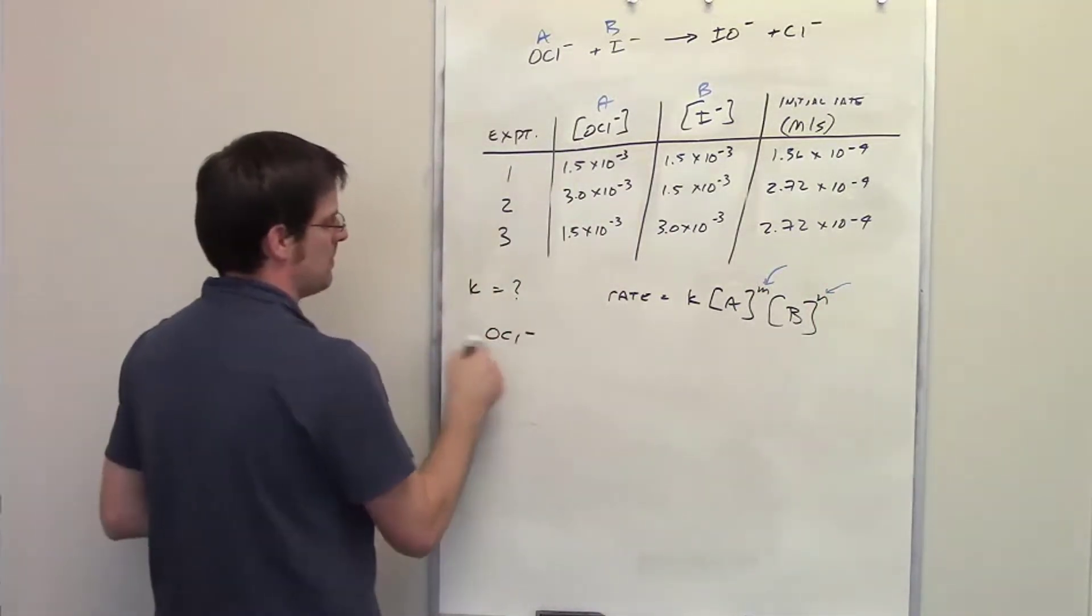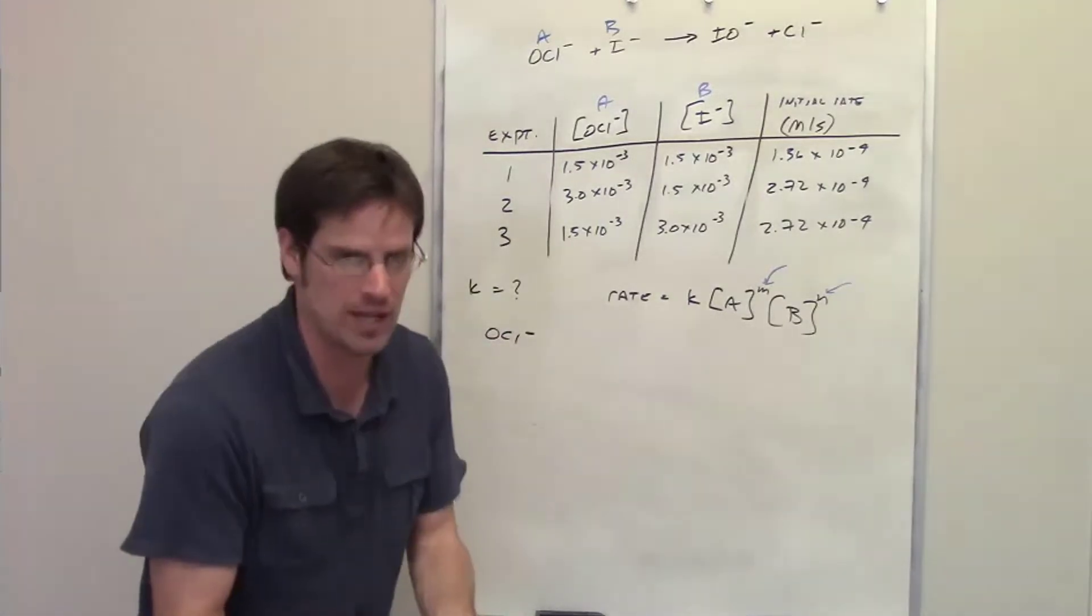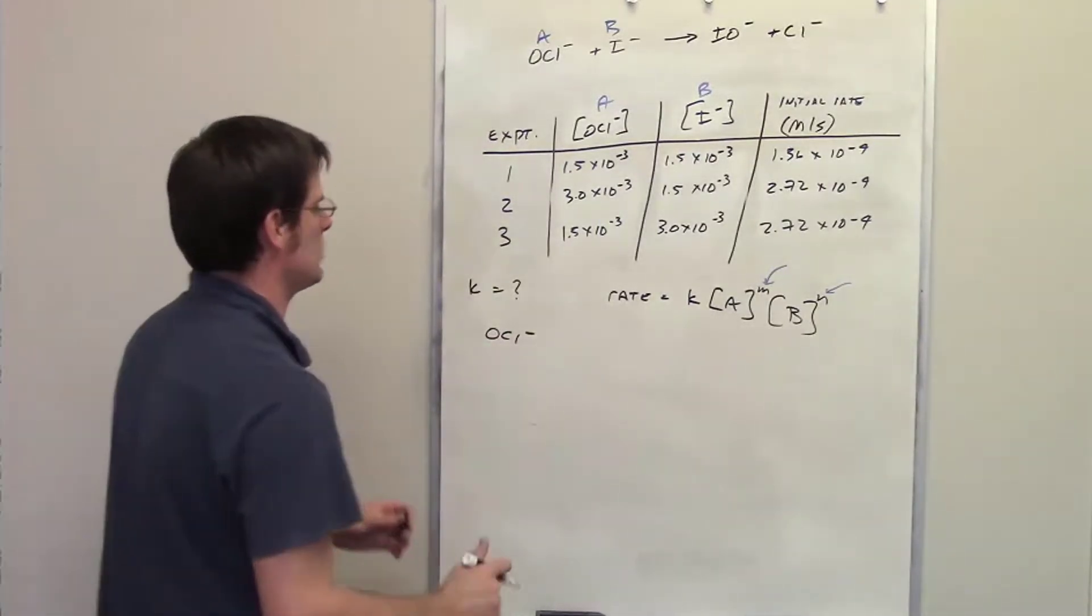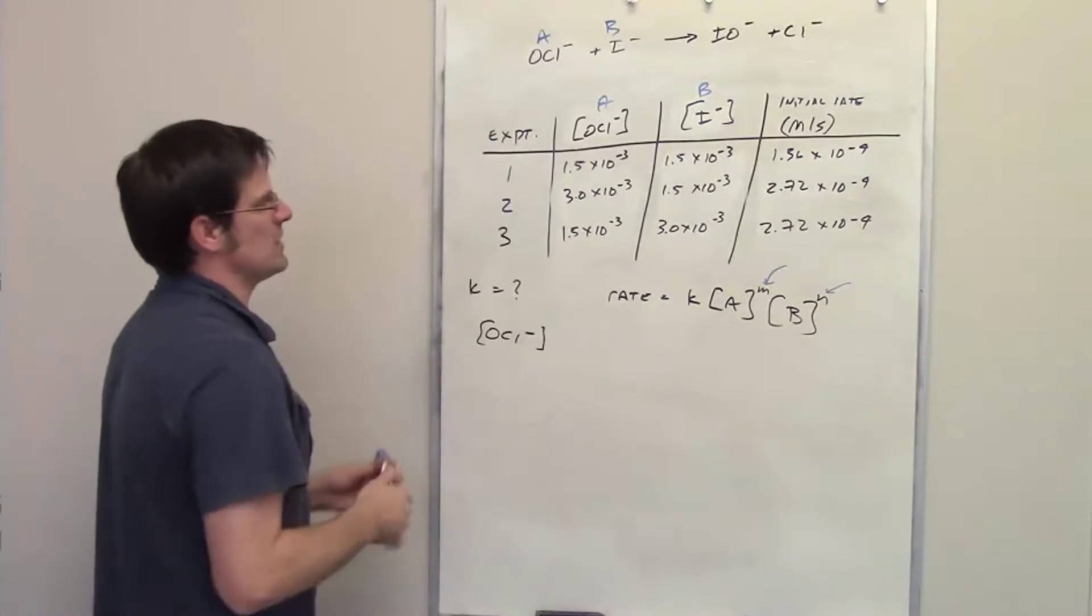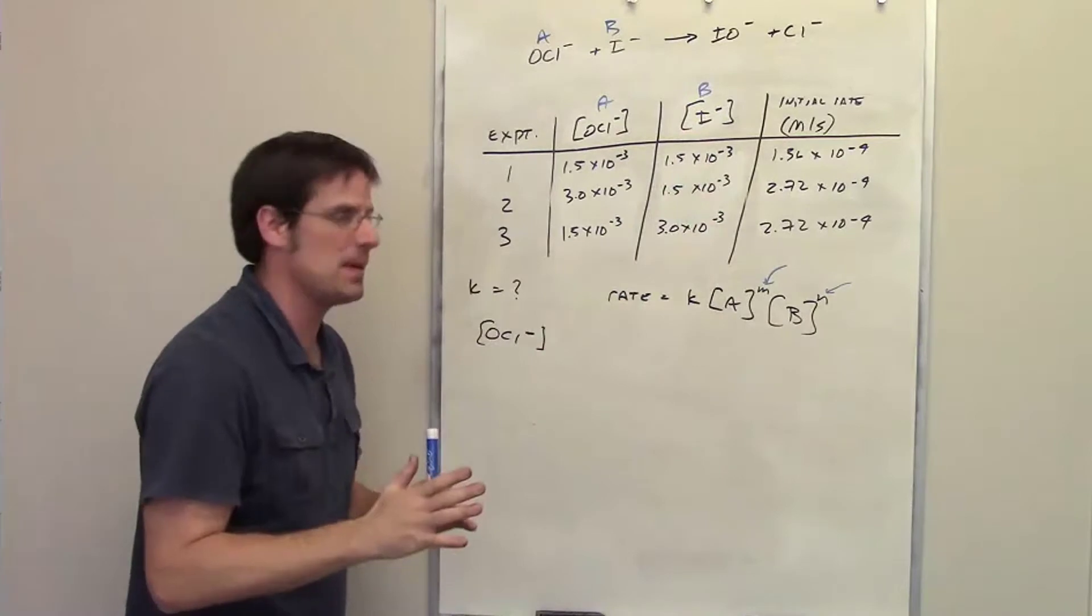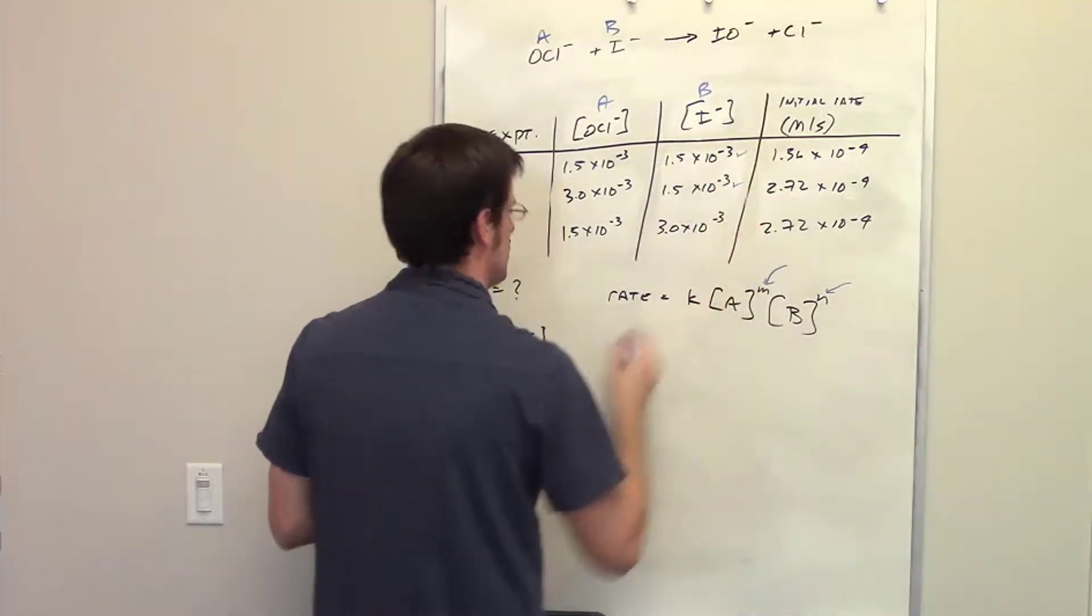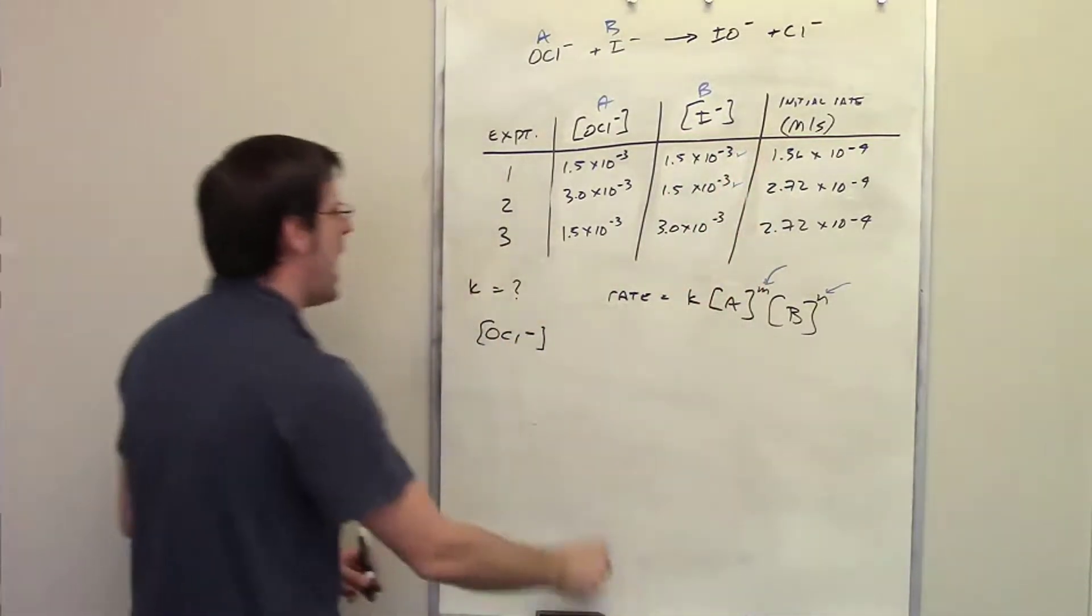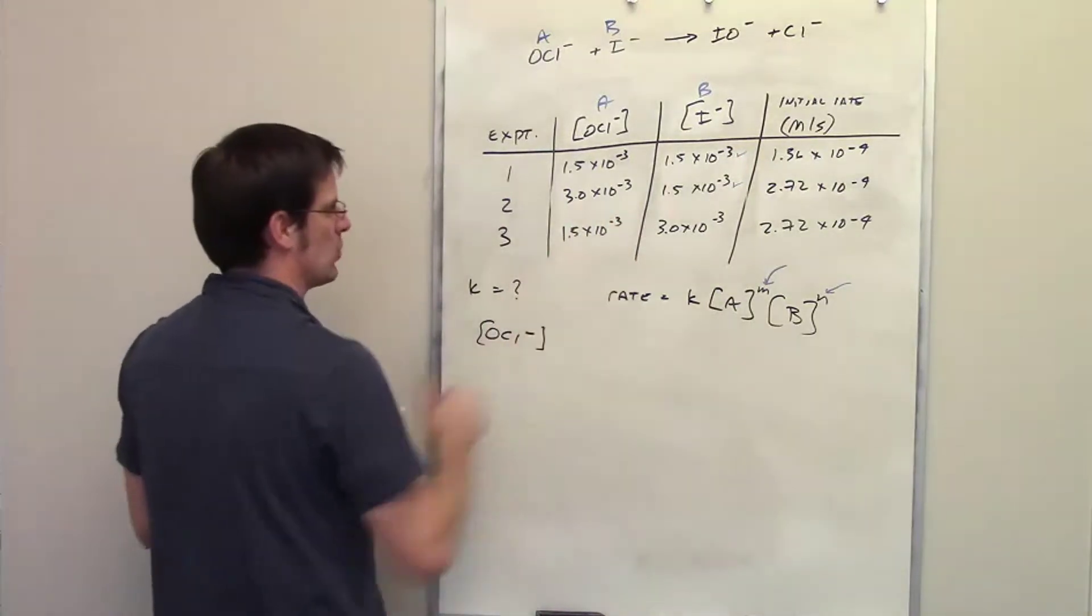So I'm going to go ahead and write down my hypochlorite anion, which once again is the active ingredient in bleach, has a lovely smell. What I'm going to begin doing is focusing on the experiments where component B's concentration was kept the same. So that's going to be experiment 1 and experiment 2, and I'm going to see how did changing the concentration of this thing change the rate.